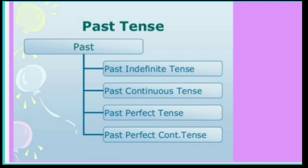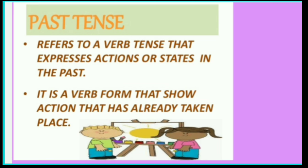Today we will discuss about the past tense. As we studied in present tense, it has been categorized into four different parts. Similarly, the past tense is also divided into four: past indefinite tense, past continuous tense, past perfect tense, and past perfect continuous tense.